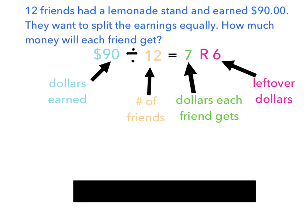In this case, 90 represents the number of dollars earned by the 12 friends. The 12 represents the number of friends who earned the money. 7 is the dollars that each friend gets. So if we start out with a pot of $90, we distribute that amongst 12 friends. So far, everybody gets $7. And the remainder 6 are the leftover dollars. So everybody gets $7 and there's 6 leftover dollars.